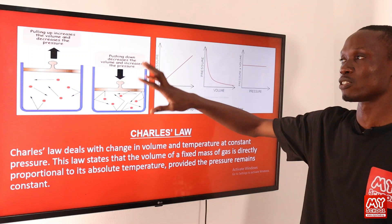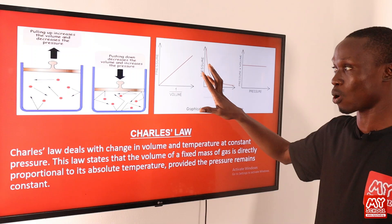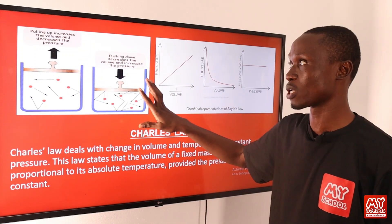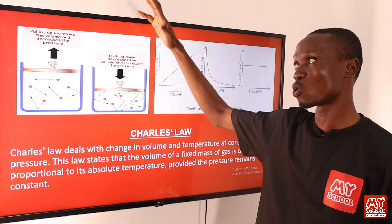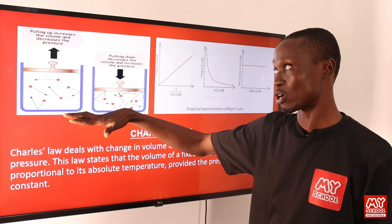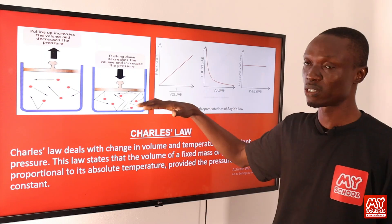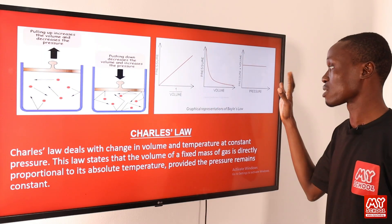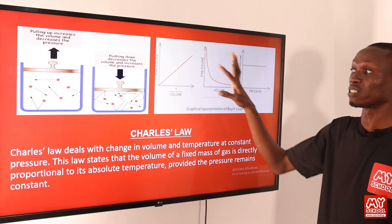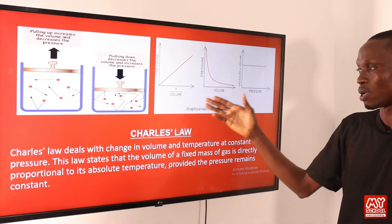The next slide shows the setup for the experimental verification of Boyle's Law. These are the two syringe positions: when the plunger is pulled up, the volume increases and pressure decreases; when the plunger is pushed down, the volume decreases and pressure increases. On the right-hand side is the graphical representation of Boyle's Law, shown in three ways.